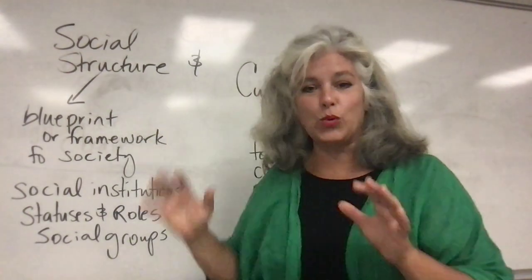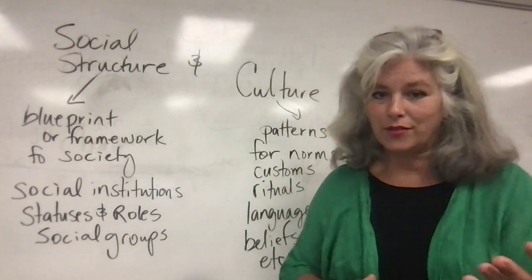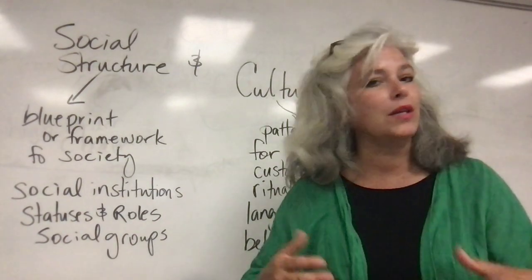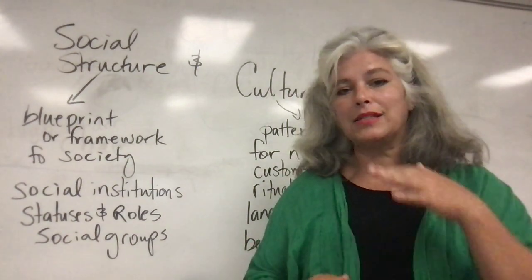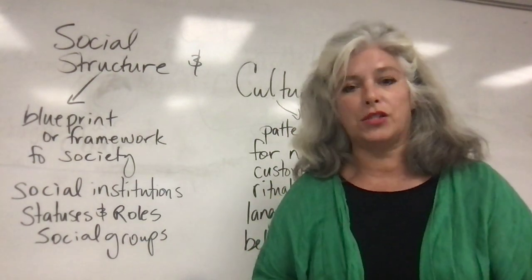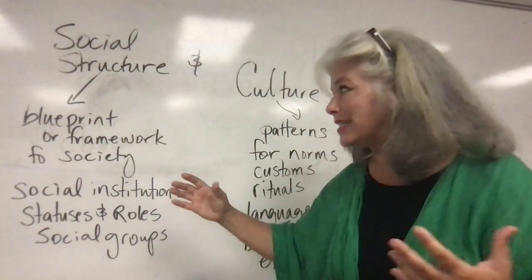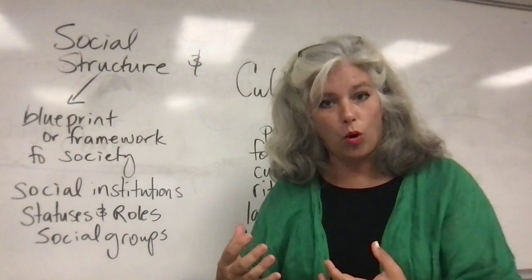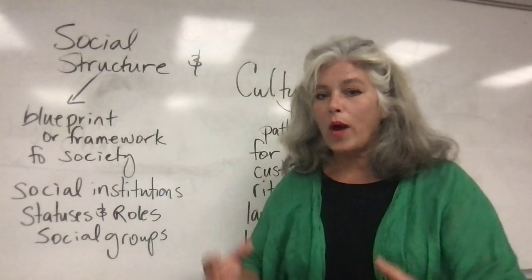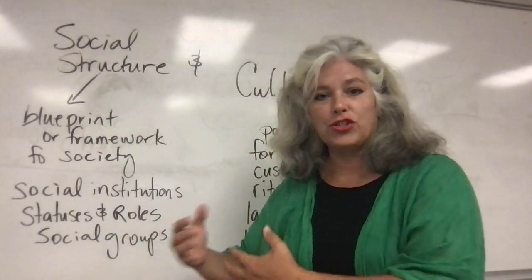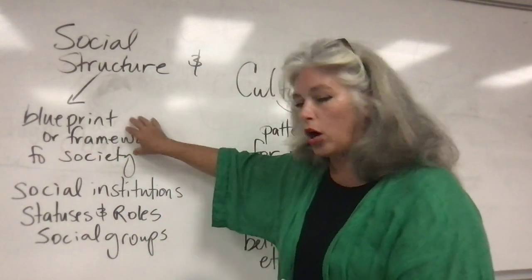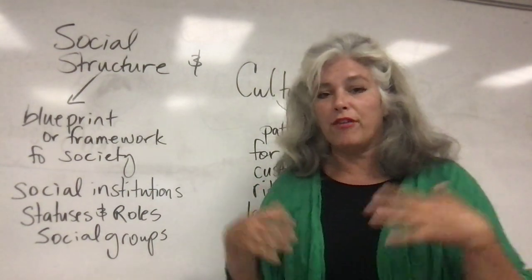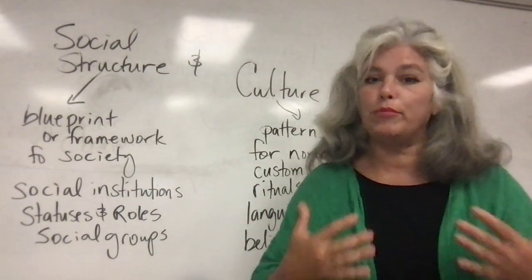Social structure is one of the major components you need on the forefront of your mind when understanding social problems. Remember from the last lecture — a social problem is only a problem when someone perceives it to be. That's the subjective element. Social structure exists, and that's the objectivity. There is a social structure or framework for society that we live in, and when people understand that certain issues in that framework are problematic, that is the subjectivity.